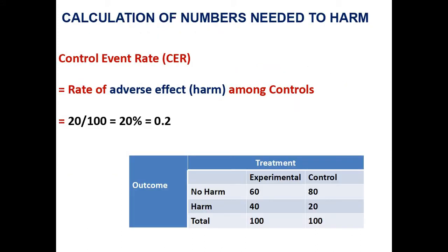Now we can see how to calculate number needed to harm. Like in number needed to treat, we have to calculate the control event rate and experimental event rate here also. Control event rate is the rate of adverse event or harm among controls.